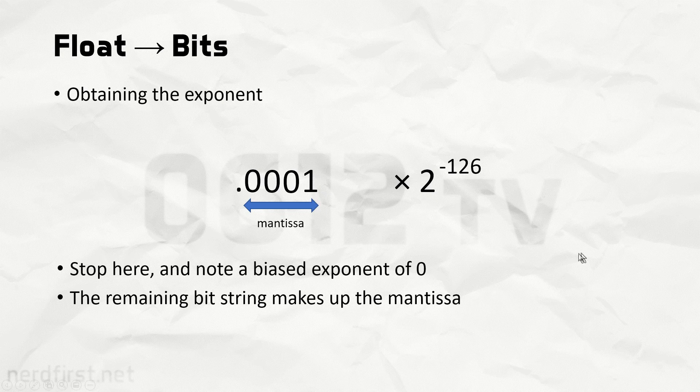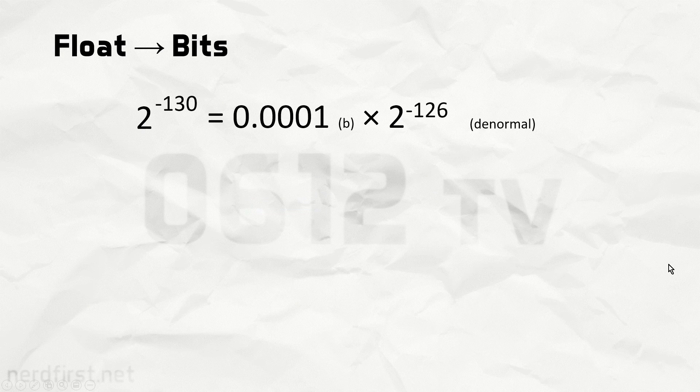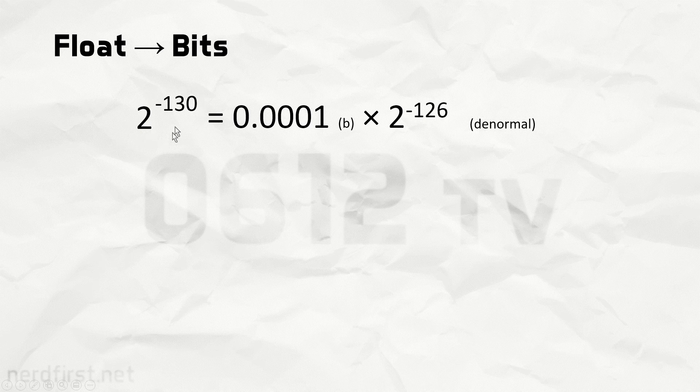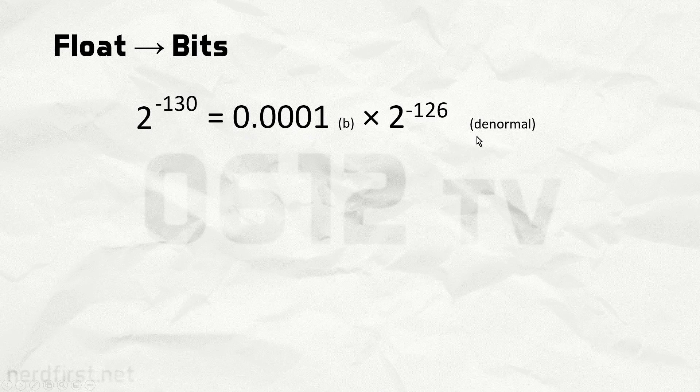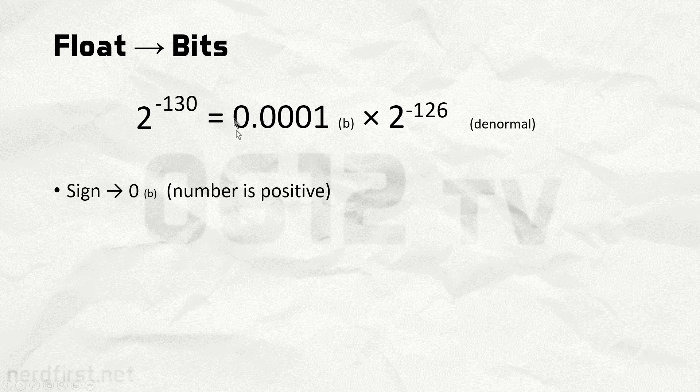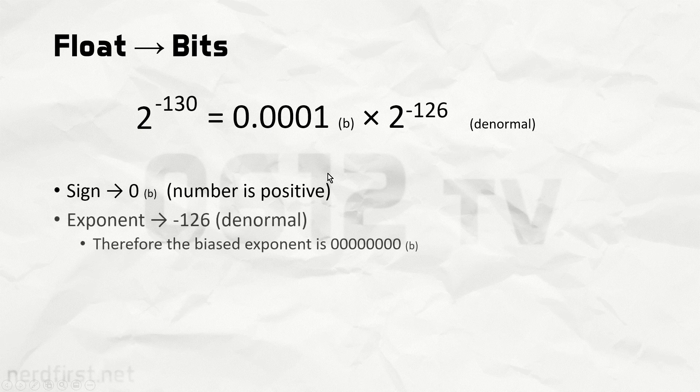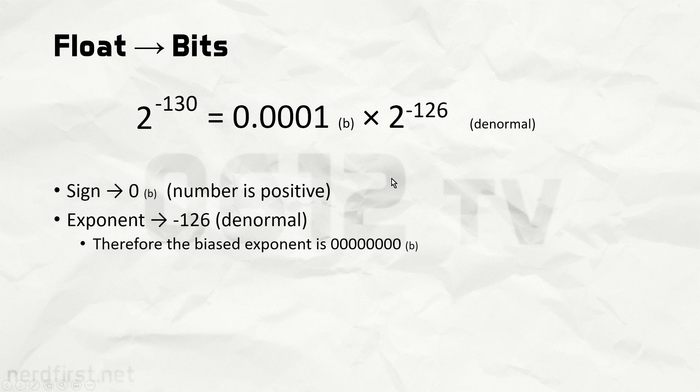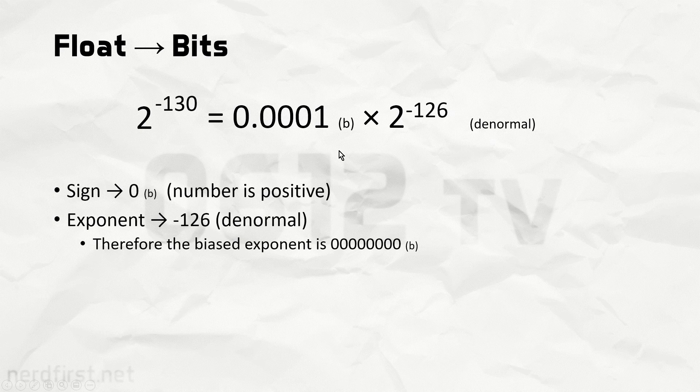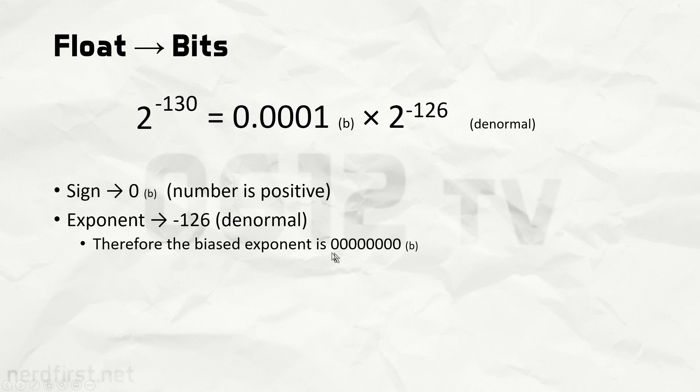We now have all the information we need to put everything together, so let's take a look at that. We now know that our input value essentially goes down to a string like this, which is not in a normal form. First and foremost, we look at the sign. It's a positive number that goes to 0, not too difficult. We can then quickly move on to our exponent. Since we know this is a denormal number without doing any more math, we know that the biased exponent needs to be just all zeros. Since this is a special case, not too difficult, we just look and come to this conclusion.